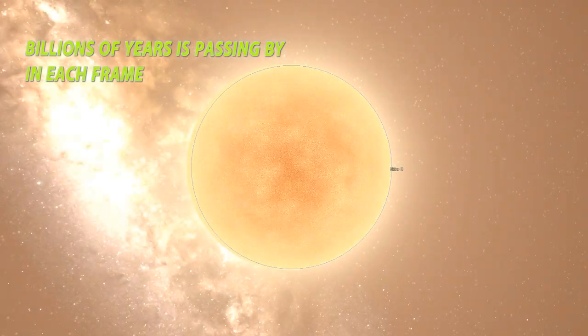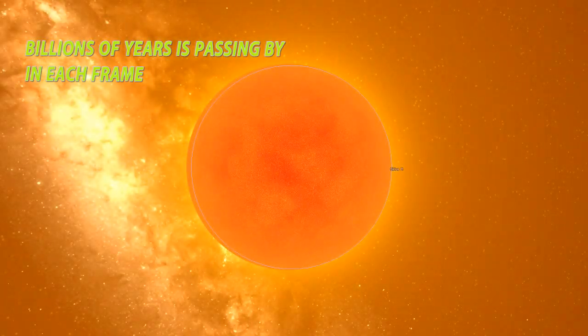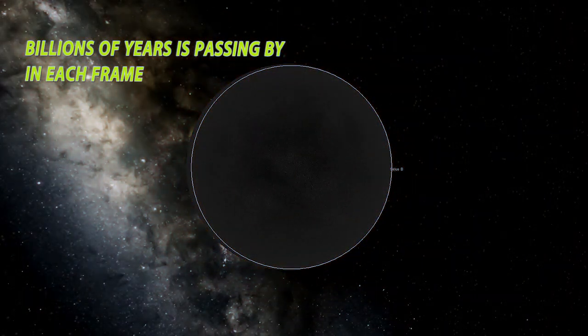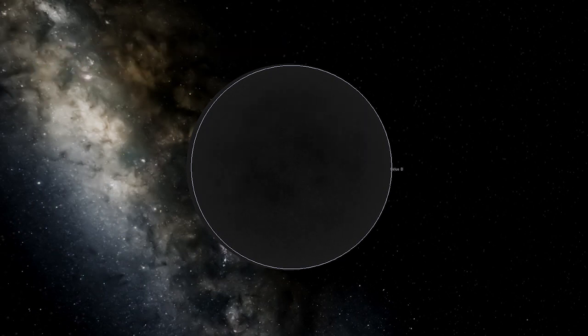But as time passes on, this white dwarf will slowly cool down and fade out as a black dwarf. But this process takes about trillions of years. That's why we don't see that happening, as the age of the universe is only 13.7 billion years.